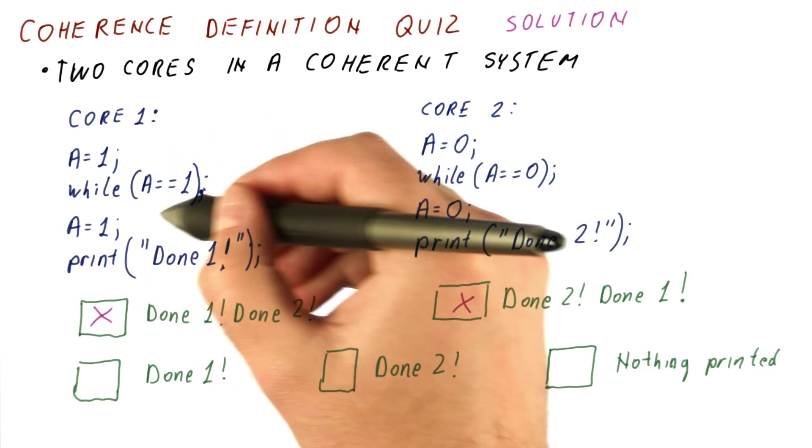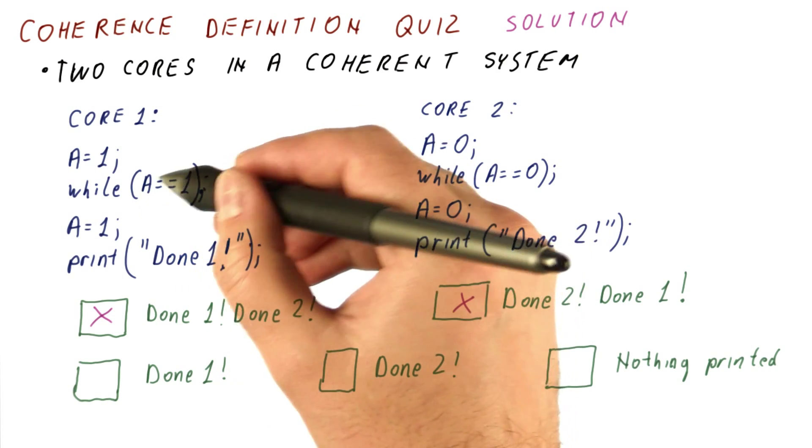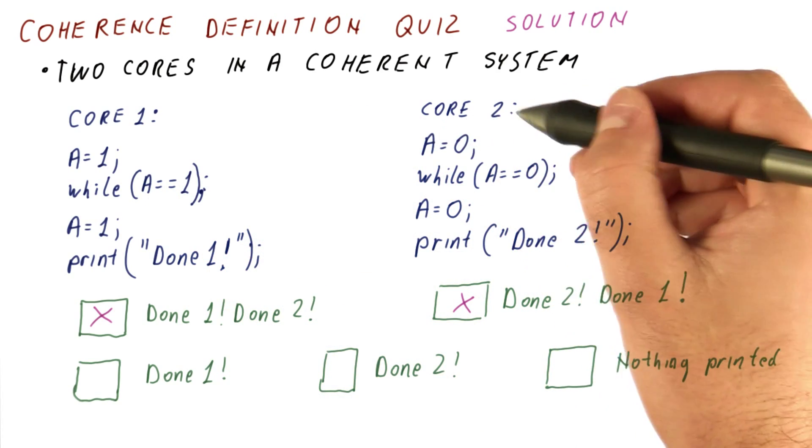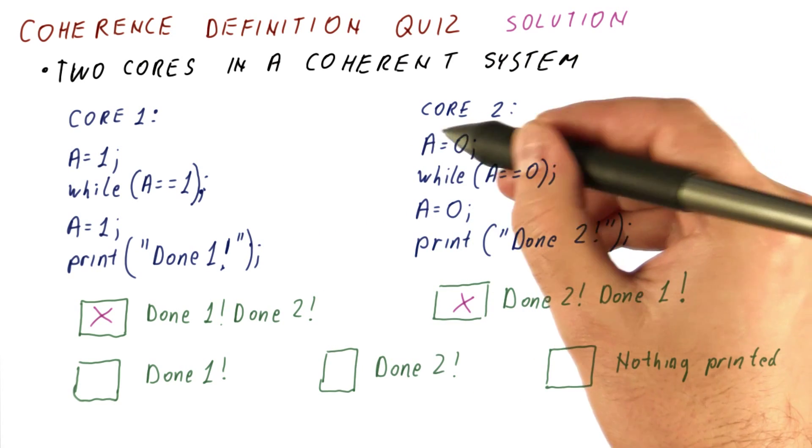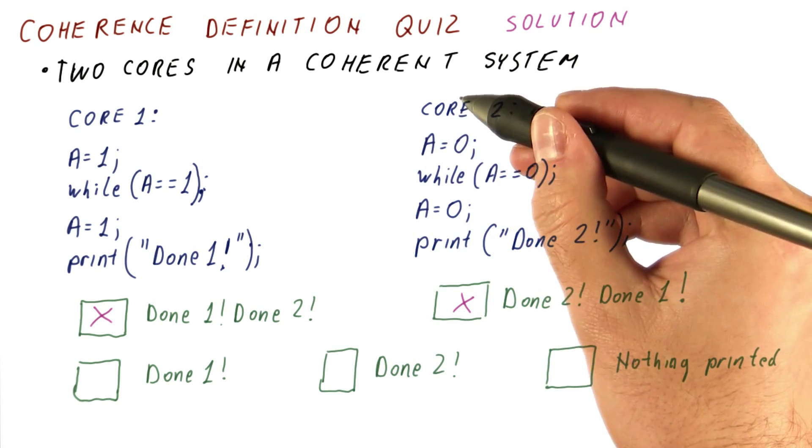So core one is stuck here, and A is one. If that happens before core two gets to A equals zero, then core two is going to release core one. So A equals zero had to happen before this.